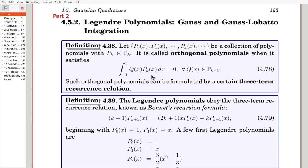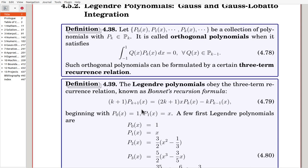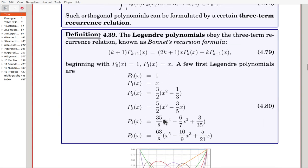Such orthogonal polynomials can be formulated by a certain three-term recurrence relation. The Legendre Polynomials are constructed by using the following three-term recurrence relation, known as Bonnet's recurrence formula. P0 is 1, P1 is x. You can see a few first polynomials. P0 is 1, P1 is x. And P2, from P2, is made by using this formula. Here, P2, P3, and P5.